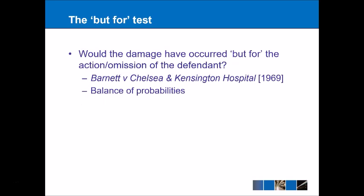Factual causation, otherwise known as the but-for test, is set out in front of you. If this comes up in a problem question, all you need to do is state the test: would the damage have occurred but for the action or omission of the defendant? The legal authority for this is the case of Barnett v Chelsea and Kensington Hospital 1969.